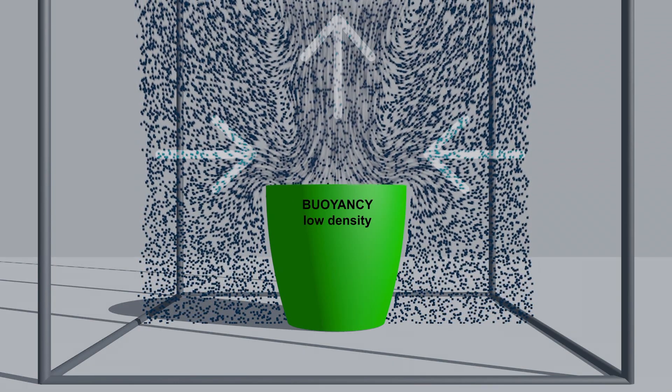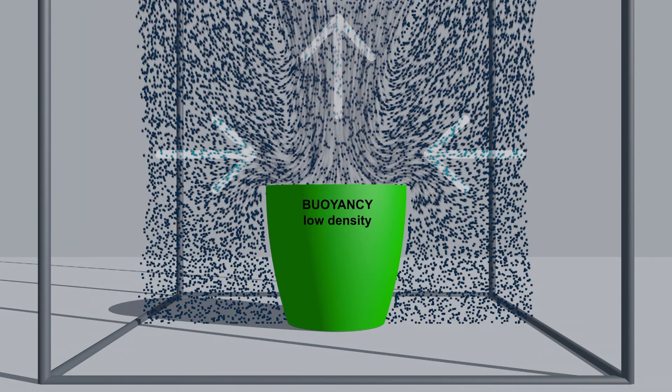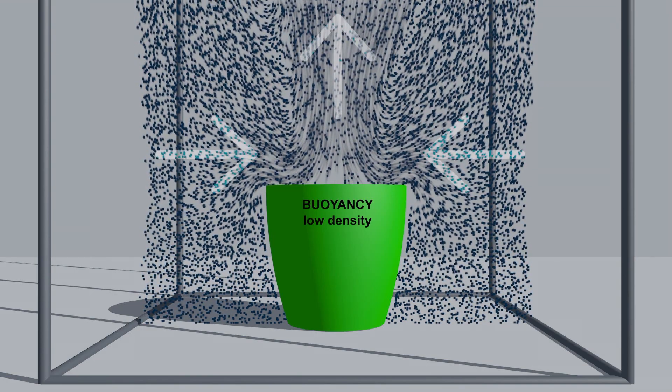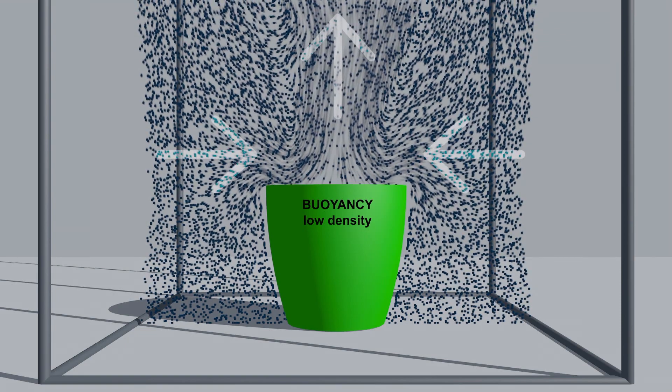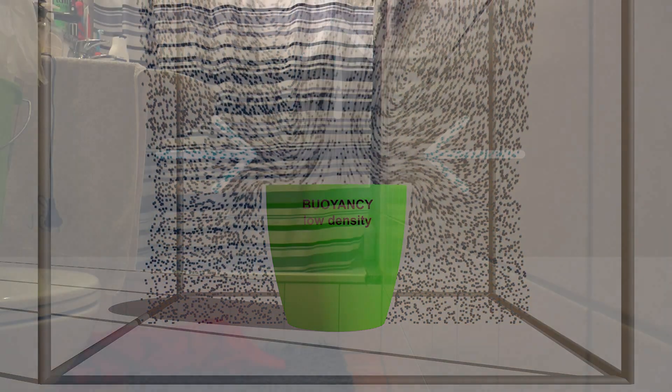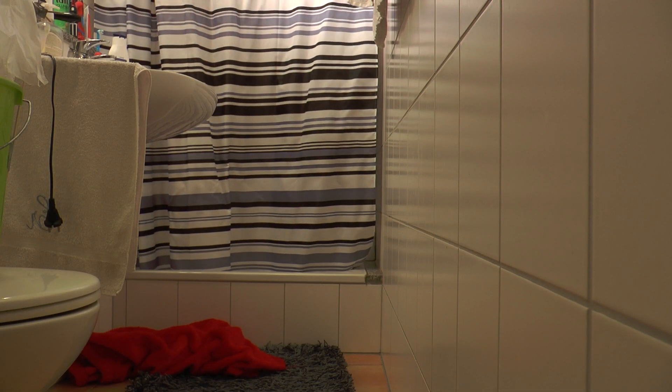Similar to a chimney, the humid air rises. In the shower, the density of the air will decrease slightly. A negative pressure develops. The shower curtain is pressed inwards.